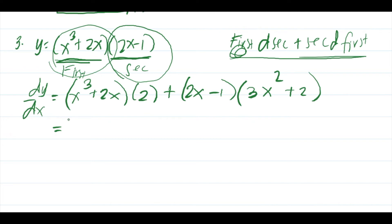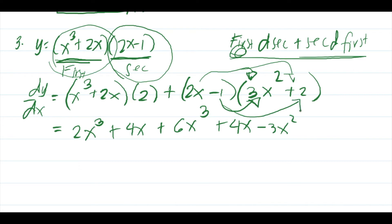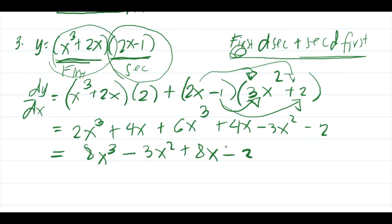Simplifying: distributing gives 2x cubed plus 4x, plus distributing 2x minus 1 over 3x squared plus 2 gives 6x cubed minus 3x squared plus 4x minus 2. Combining like terms: 2x cubed plus 6x cubed equals 8x cubed; minus 3x squared; 4x plus 4x equals 8x; minus 2. So the answer is 8x cubed minus 3x squared plus 8x minus 2.